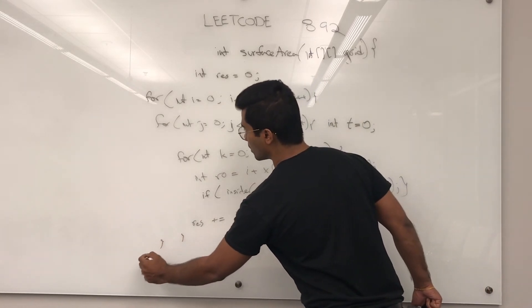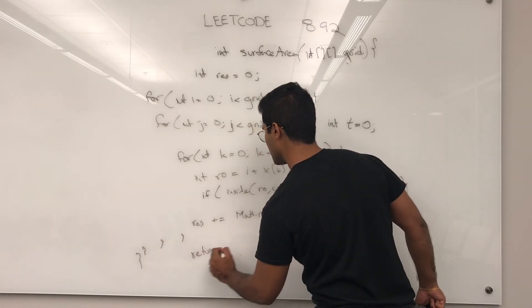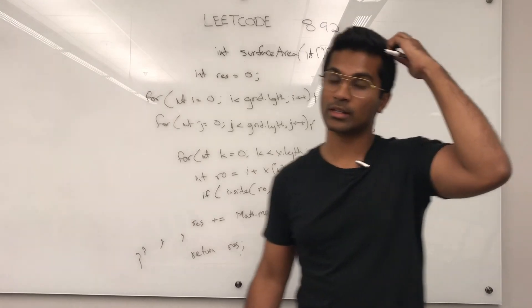That's the inner if, inner for, most inner and the outer for. So, return res. That's pretty much how you solve LeetCode 892.